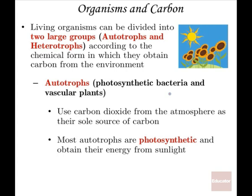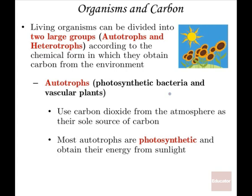Organisms and carbon: as we discussed earlier, it depends on whether the organism can utilize carbon dioxide directly, or if organisms rely on carbon from other organisms. The autotrophs are organisms that engage in photosynthesis, using carbon dioxide from the atmosphere as their source of carbon, and they are able to produce glucose from atmospheric carbon in the presence of sunlight.